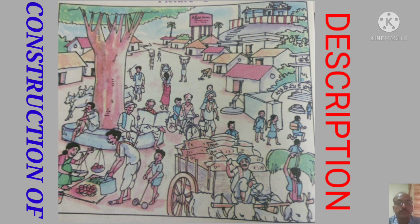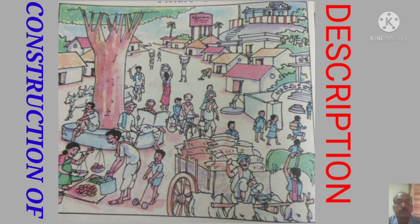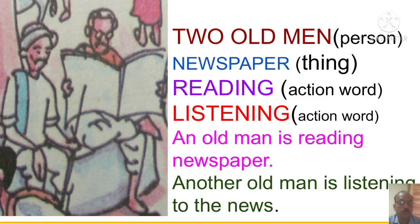Before framing sentences, you have to put interactive questions to yourself to get more ideas for writing the sentences. Now I will present each and every person in the picture and what they are doing, in full sentences. Please observe keenly and in each and every picture, note down the persons, things and action words. I will read out the full sentences.